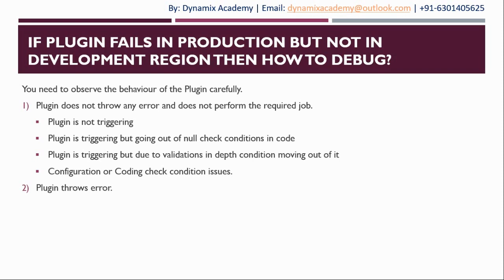The next case is that the plugin is triggering, but somewhere within your code you have placed a null check. You are retrieving a set of collections and placed null checks in your code. There is no such data created in the production environment, so whatever you are retrieving in your custom code, due to the null check conditions, the plugin is not performing the required job. Another common case is where the plugin is triggering, but due to a validation depth condition not being handled properly, the plugin exits before performing its required job. Generally this occurs due to misconfiguration or null check conditions not being met, so the plugin will not throw any error but still not perform its required job.